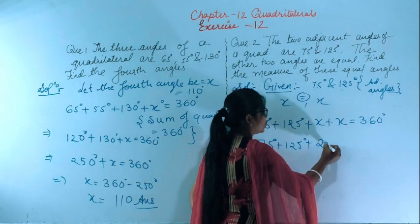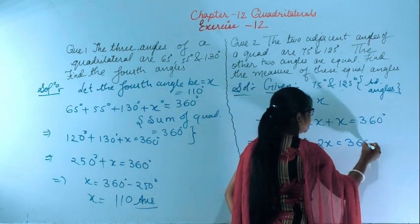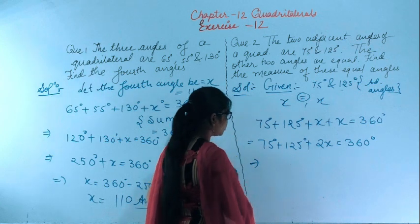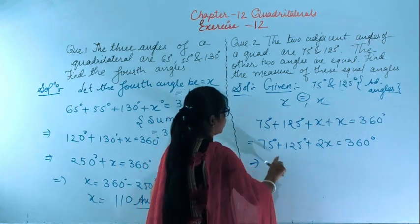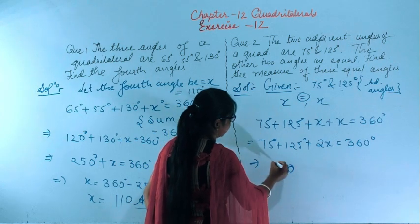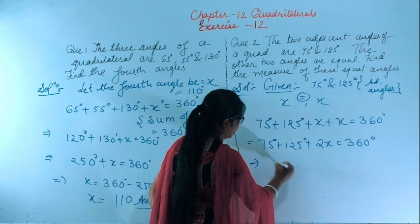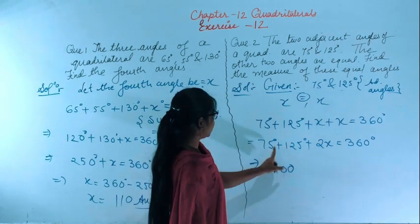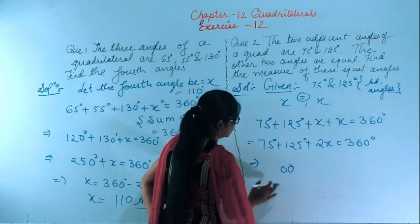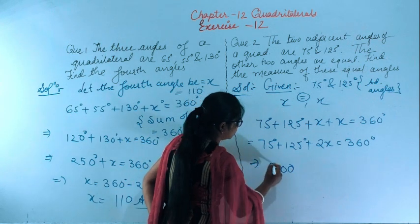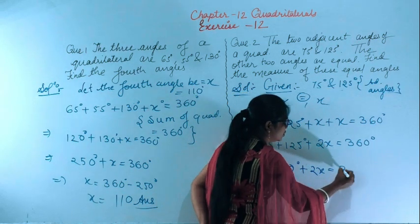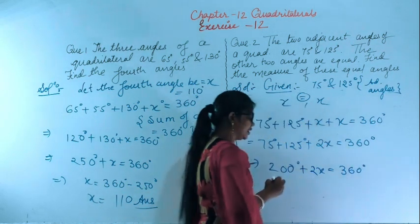Combining the x terms: 2x. So 75 plus 125 gives 200 degrees. Therefore 200 degrees plus 2x equals 360 degrees.